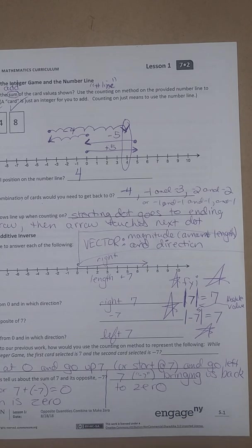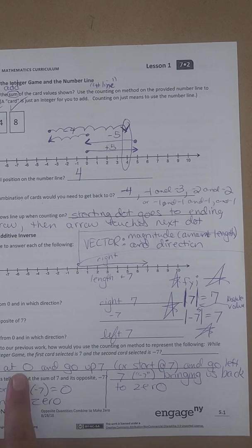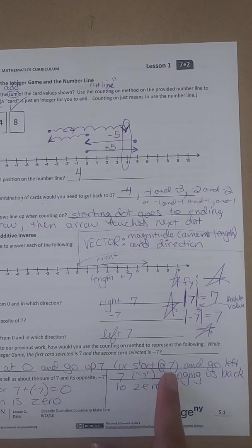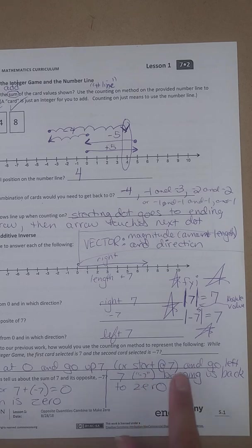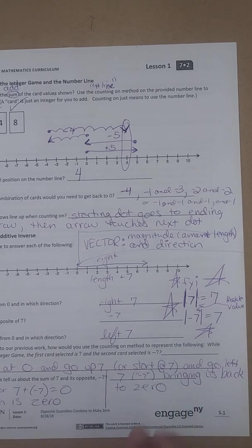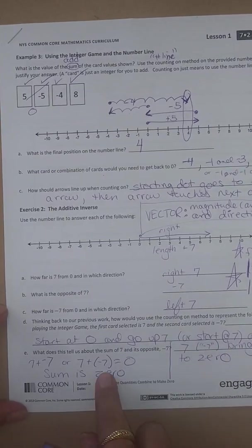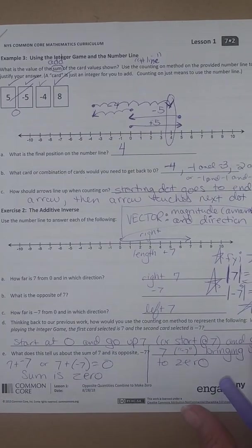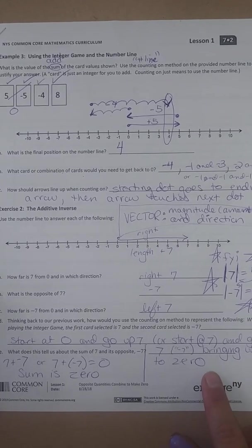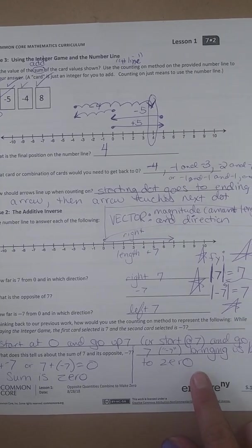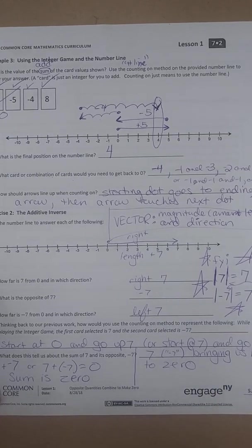Thinking back to our previous work, how would you use the counting on method or the number line to do this? You start at 0, you go up to 7, or you start at 7 and you go left to 7, which is this. Bringing us back to 0. So the next answer is what happens when you get 7 and negative 7? You get 0. Okay? And if I went too fast, you can always pause it. So you can copy all this stuff down.